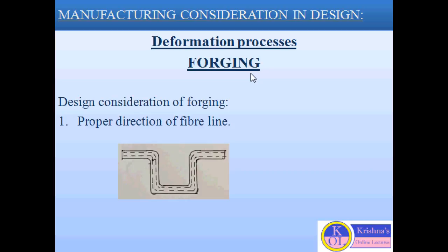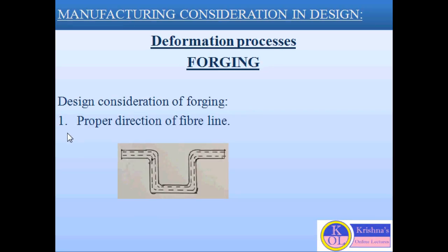Other deformation processes include rolling, extrusion, press working, etc. The first design consideration of forging is proper direction of fiber line. The dotted line shown is called the fiber line for a particular part. So if we are designing a crankshaft and choosing a forging process for manufacturing, the fiber line should be parallel to the tensile force and perpendicular to the shear force. We avoid machining for the cut because machining will break the fiber line and the part becomes weak.